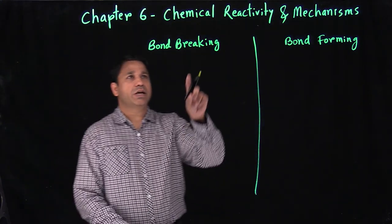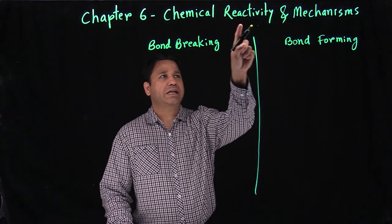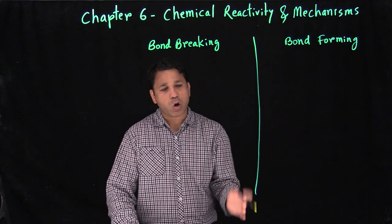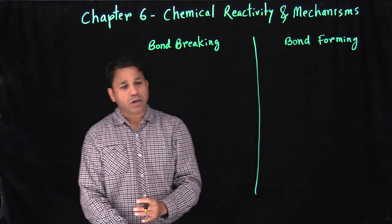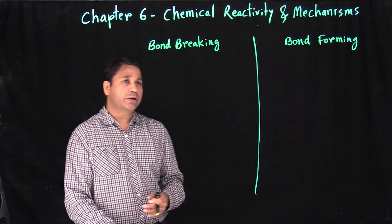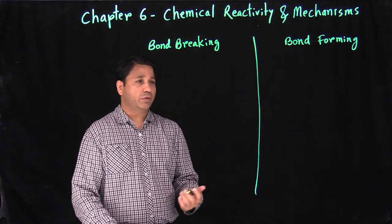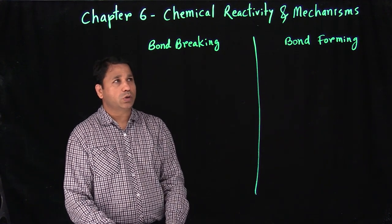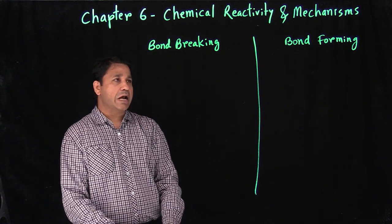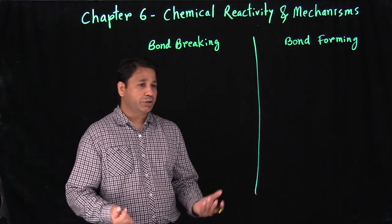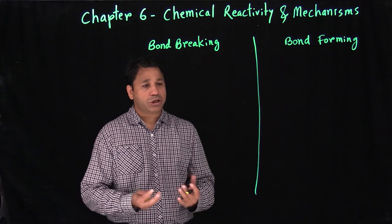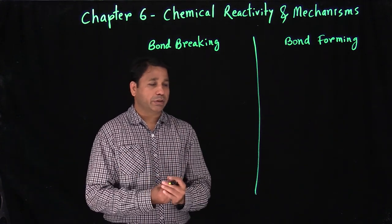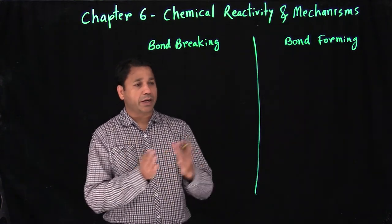Chapter 6 is chemical reactivity and mechanisms. Starting from chapter 6, we'll be talking about all the different reactions we can do with organic compounds. When we talk about a reaction, what's happening? In a reaction, we break bonds and we form new bonds — breaking and forming.